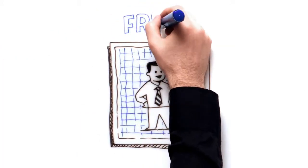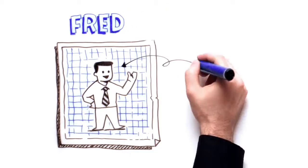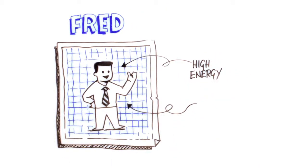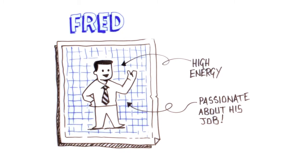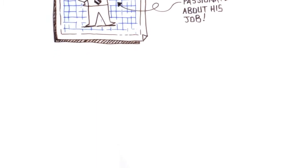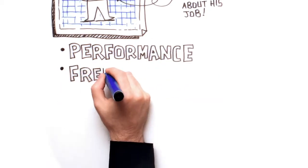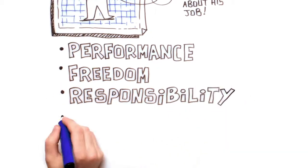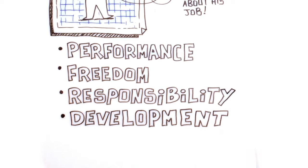What does that mean? Well, let's meet Fred and find out. Fred works at Tigers too. Like everyone here, Fred is a highly energetic individual and passionate about his job. He does things the Tiger's Way, based on four important elements: performance, freedom, responsibility, and the development of his own career and those of the people he works with.